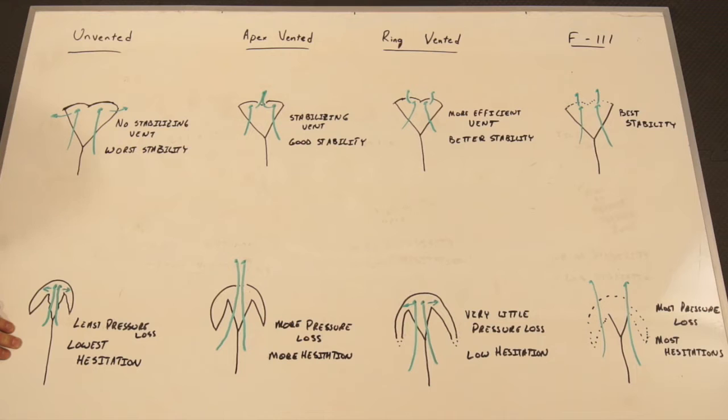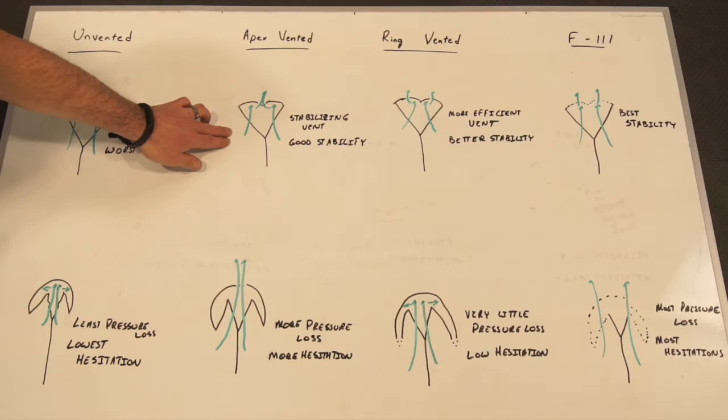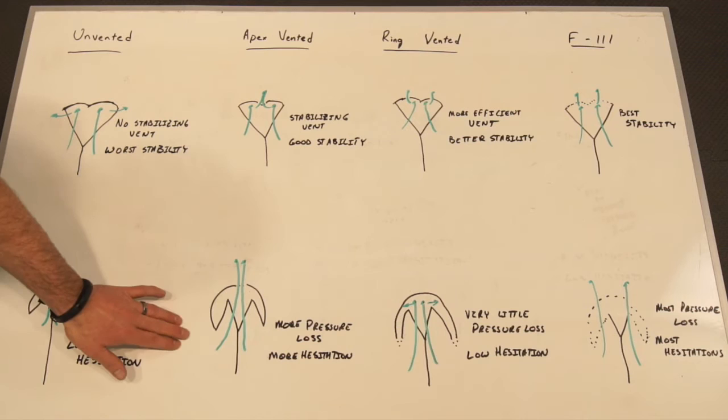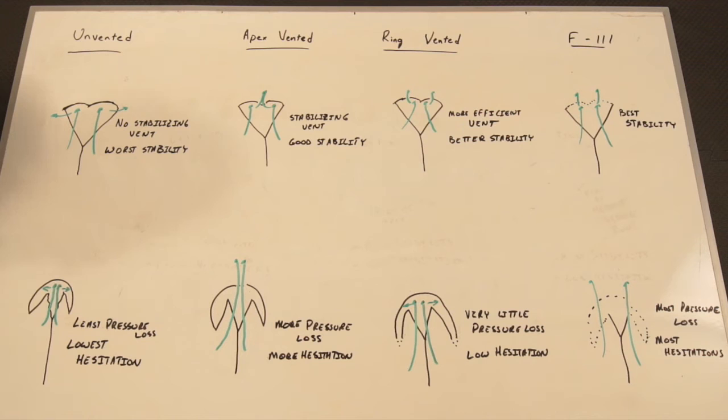The apex vented pilot chute has a stabilizing vent placed at the center or apex, and has a substantial improvement in stability. It has very good stability. However, it experiences more pressure loss through the apex vent during pressurization, and therefore we see a higher hesitation rate with the apex vented pilot chute.